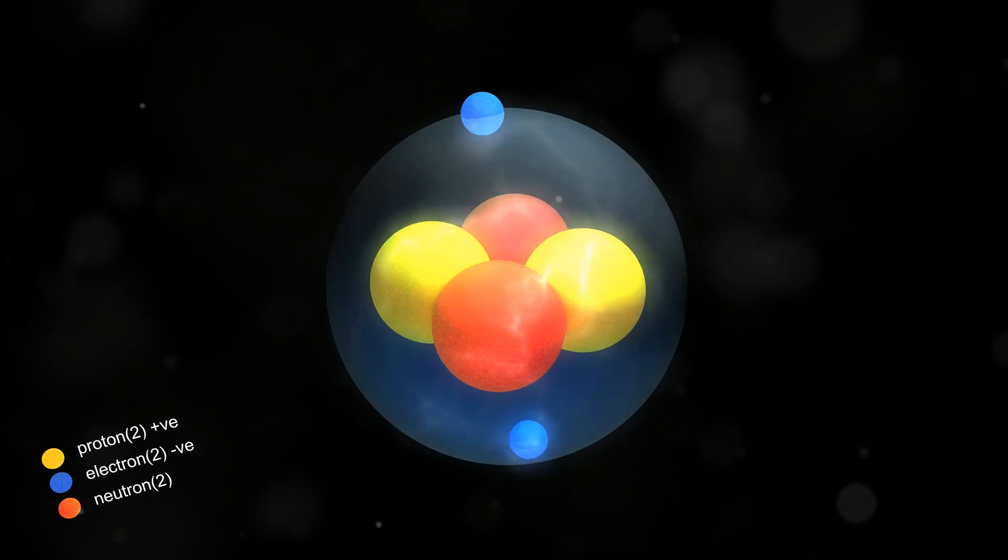As the universe expanded and cooled, energy began to condense into matter. The first particles to emerge were quarks and gluons, the building blocks of protons and neutrons.